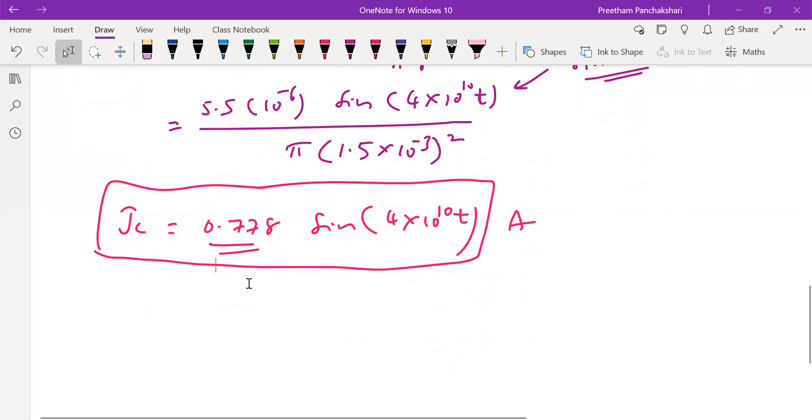But in this problem it is not required. Let us find Jd. Jc by Jd magnitude ratio is given by σ/(ωε).